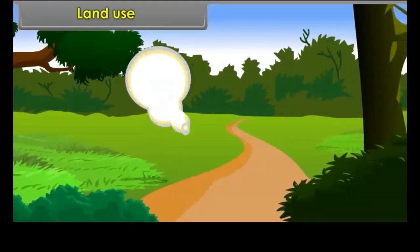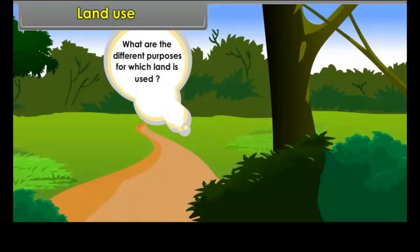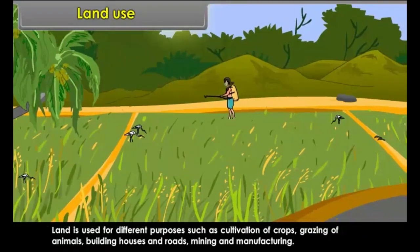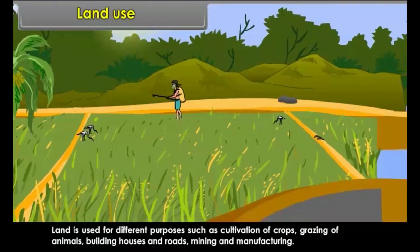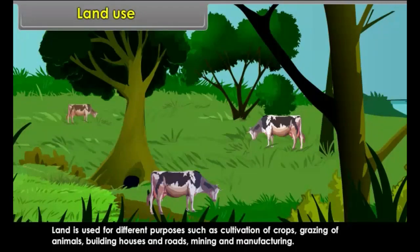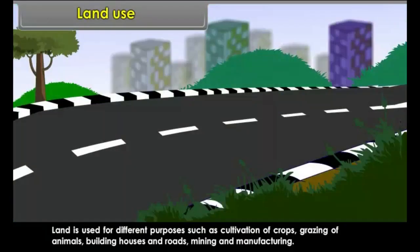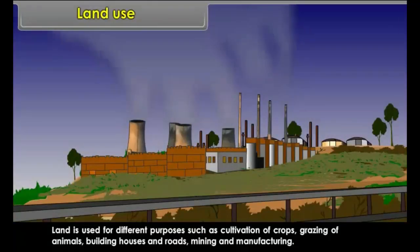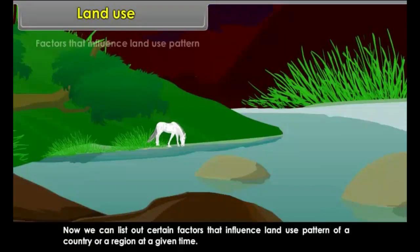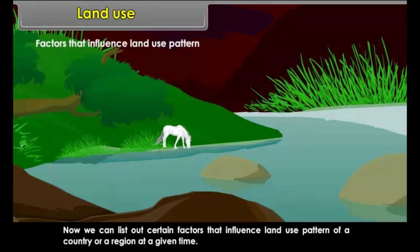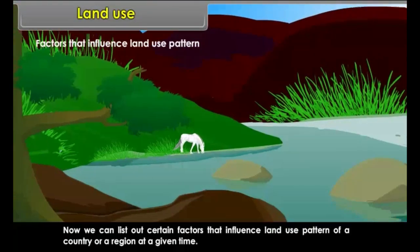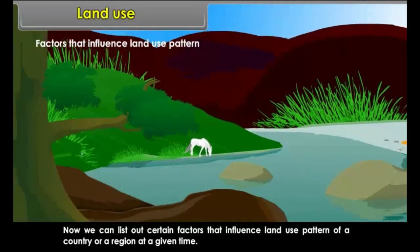Land is used for different purposes such as cultivation of crops, grazing of animals, building houses and roads, mining and manufacturing. This is commonly termed as land use. Certain factors influence the land use pattern of a country or a region at a given time.